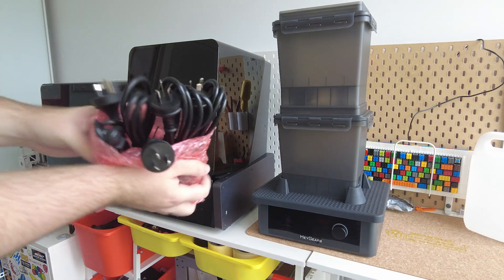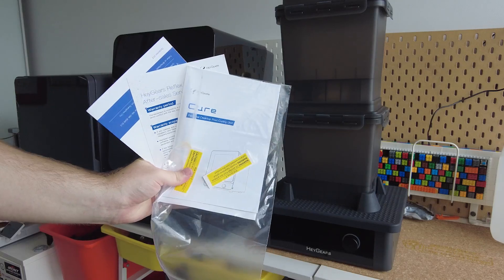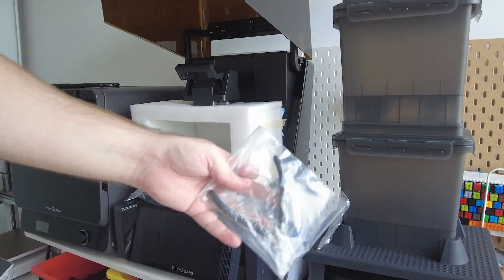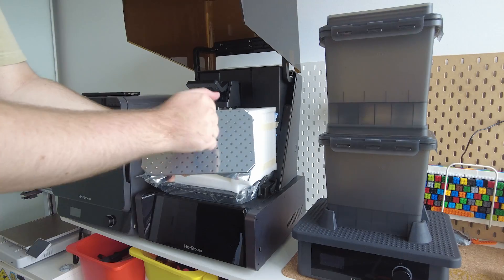But more on that later. And of course the package also included all the accessories you'll need as well as some spare parts. And inside the printer they included gloves, filters, allen keys, some snips, a scraper, the resin sensor, and some other miscellaneous stuff.